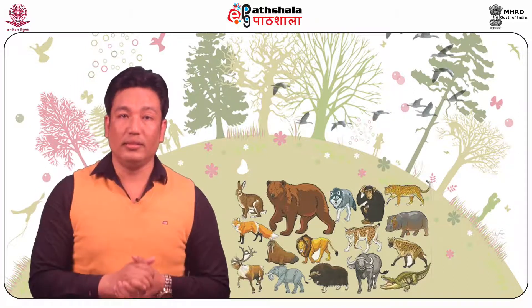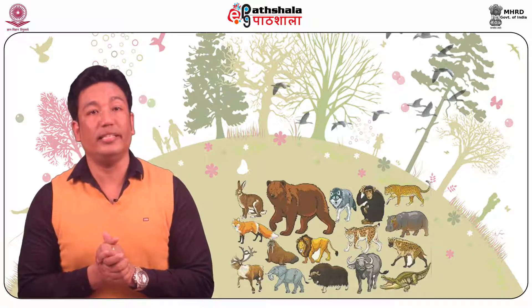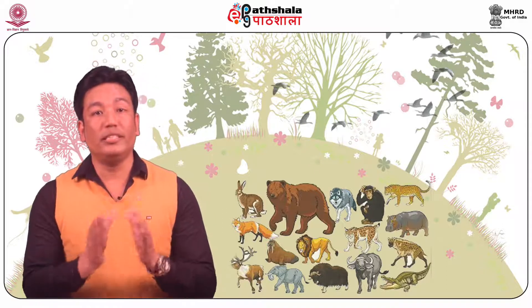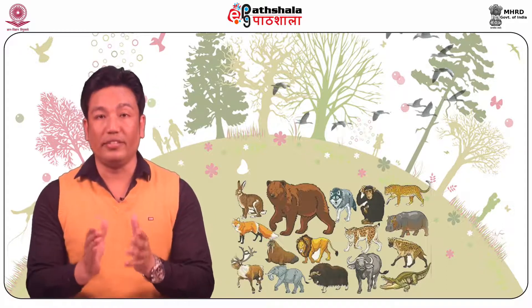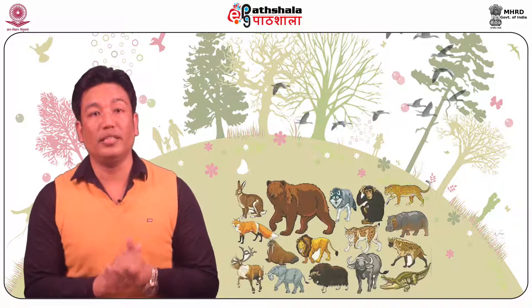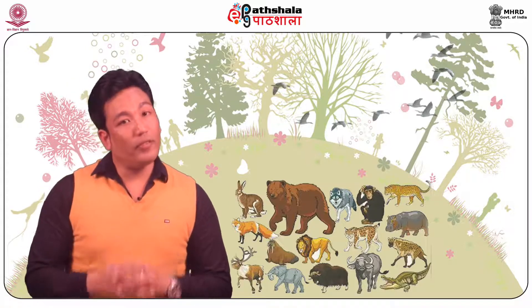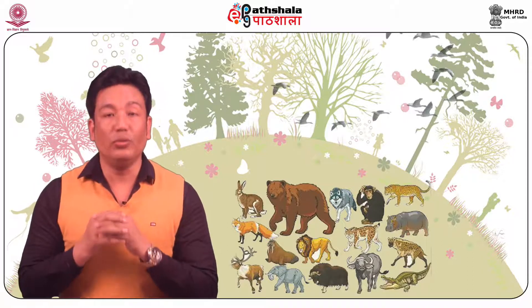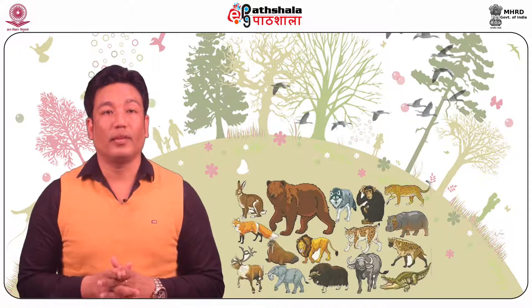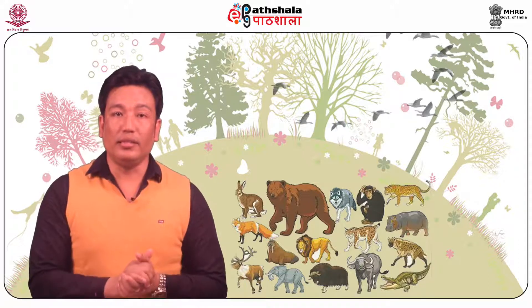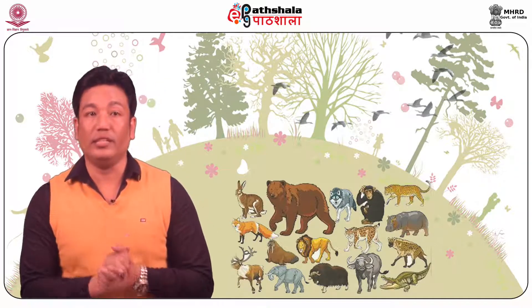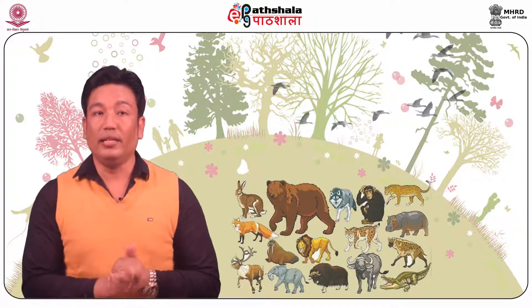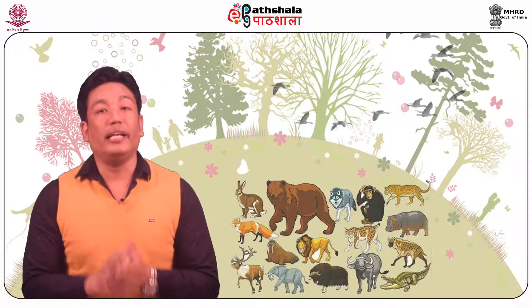On the other hand, the other type of one-sided relationship is called amensalism, where one population is neither harmed nor benefited, but the other population is negatively affected. This type of interaction is designated as negative-zero. Amensalism is a nebulous relationship which involves chemical interactions such as allopathy and antibiosis.